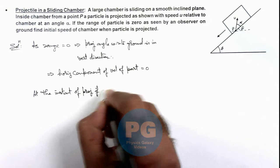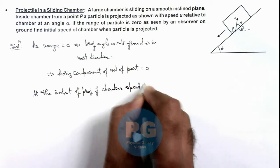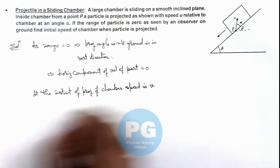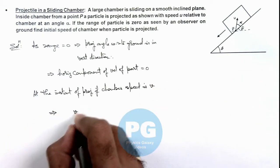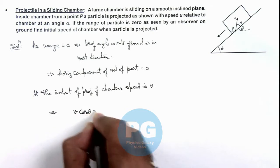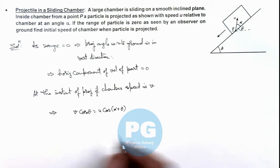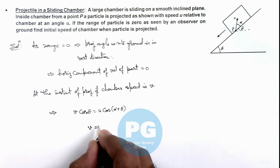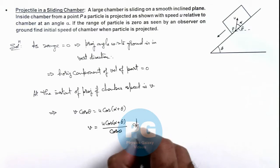if chamber speed is v, this implies here we can write this v cos theta should be equal to u cos(alpha + theta). So here we can directly get the value of speed of chamber at the instant when the particle is projected, that is u cos(alpha + theta) divided by cos theta, and that will be the final result of this problem.